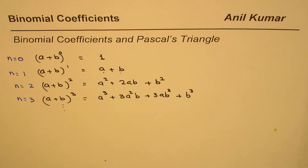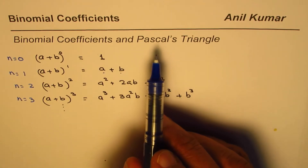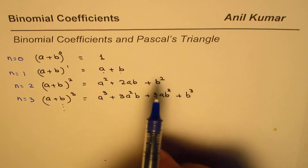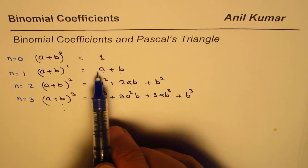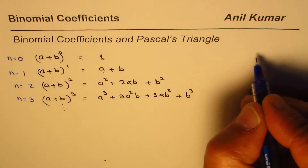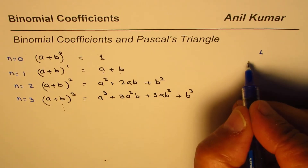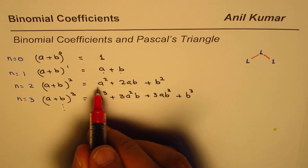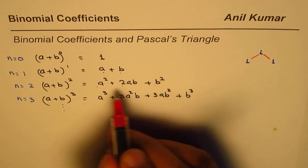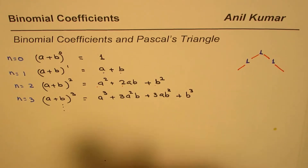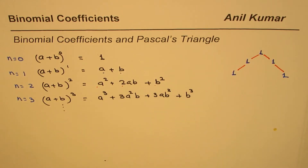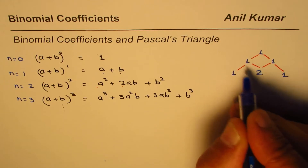Now the question we started with was finding a relation with Pascal's triangle. Let's analyze the coefficients. For n = 0, the coefficient is 1. For n = 1, the coefficients are 1 and 1. For n = 2, we have three coefficients: 1 on each side and the center term coefficient is 2, which you can get by combining 1 and 1 — just as in Pascal's triangle.